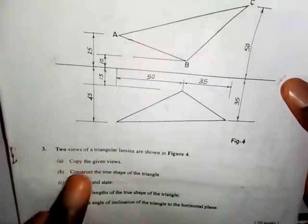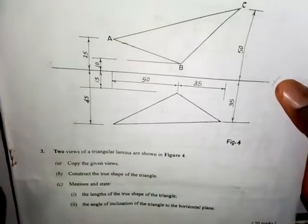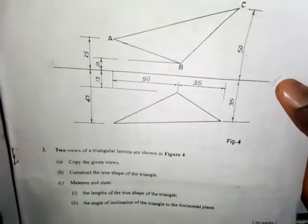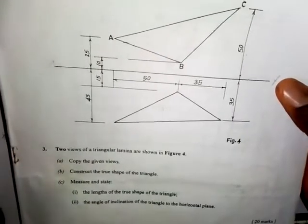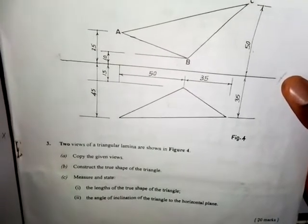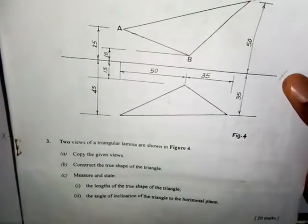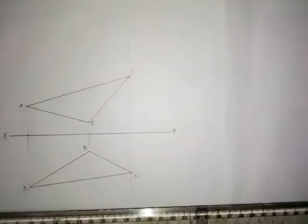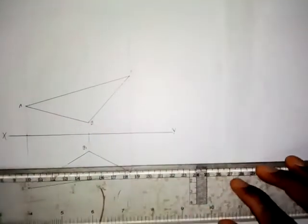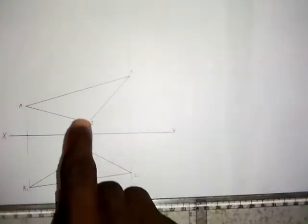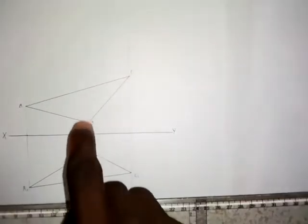Question A says: copy the given views. Question B says: construct the true shape of the triangle. Question C says: measure and state the length of the true shape of the triangle and the angle of inclination of the triangle to the horizontal plane. I've already drawn the given views - this is the plan and this is the front view.